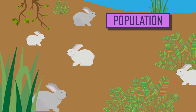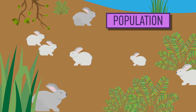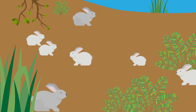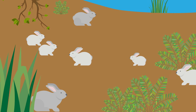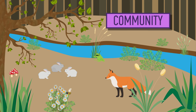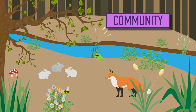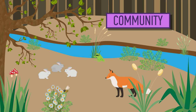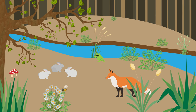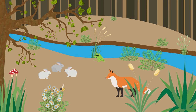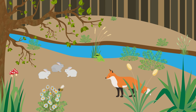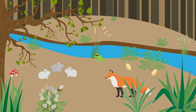Populations are all members of the same species in the habitat at one time. While populations describe just one species, a community is all of the organisms in multiple species that coexist in the habitat at one time. So the community is the foxes, rabbits, insects, plants, fungi and everything else living in the woodland.